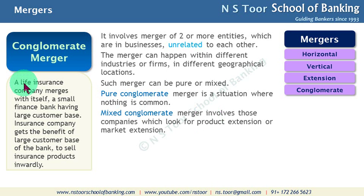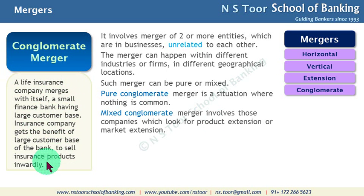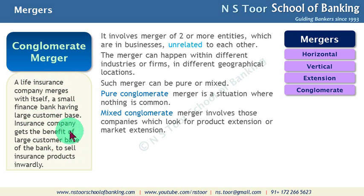Let us see an example: a life insurance company merges with a small finance bank having a large customer base. In this case, the insurance company gets the benefit of the bank's large customer base to sell insurance products inwardly. So when a life insurance company merges with a small finance bank with a large customer base, it can sell insurance products to the bank's customers. This type of merger is called conglomerate merger.